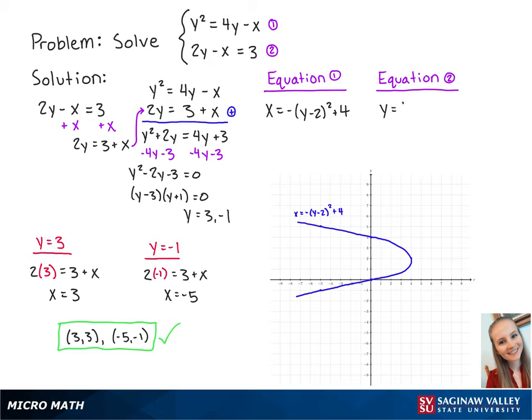The standard form of the second equation is y equals 1 half x plus 3 halves. The slope of this line is 1 half and the y-intercept is 3 halves. So using this, we can graph a line that looks like this. Now we can see the two solution points at (3, 3) and (-5, -1). And this completes the problem.